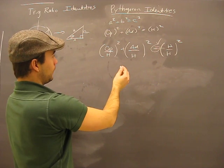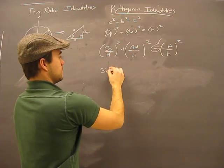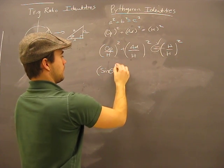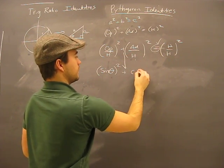Now, opposite over hypotenuse, that side. Okay, plus, still there, adjacent over hypotenuse, cosine side.